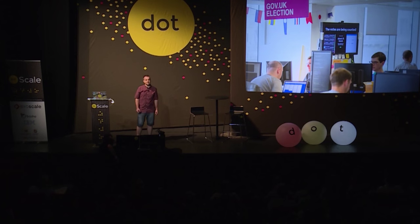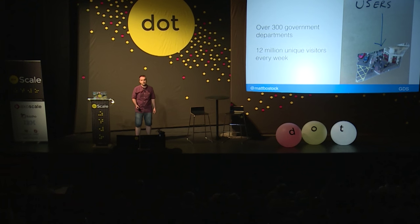During events of national significance, we're the publishing platform for government. So during the election in May, we hit the button to end the previous government and start the new one, and we archived all of the policies relating to the previous government so they're marked as such, so that users have a historical record and can see the difference between the last government and the current one. As the canonical source of information for the UK government, we have users that really depend on us for our availability and our integrity. We have over 300 government departments that use us, and we have 12 million unique weekly visitors.